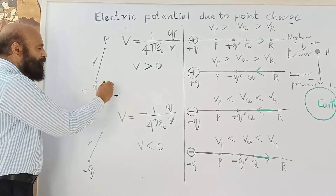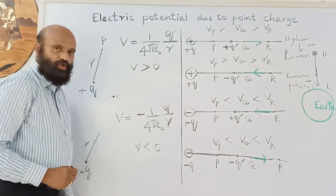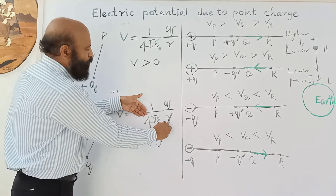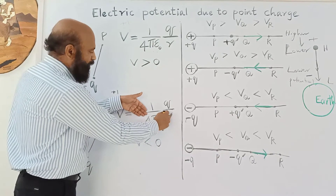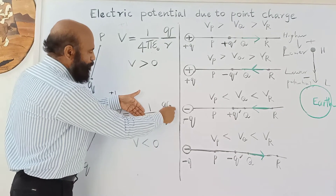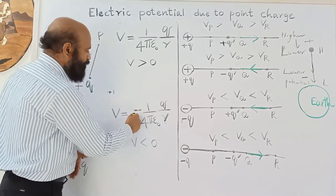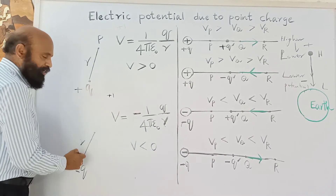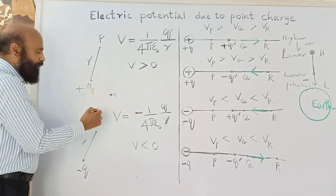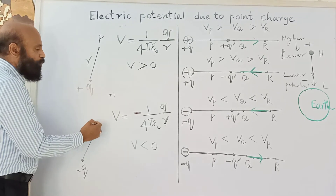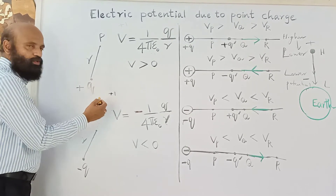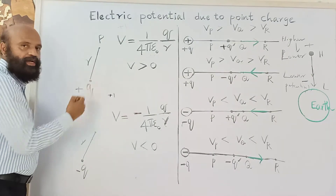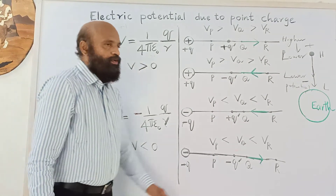As we move away from a negative charge, the potential increases. You can see this from the expression: as r increases, the magnitude (q/r) decreases, but because of the negative sign, the value increases. So for a negative charge, as we move away, potential goes on increasing from a negative value and finally becomes zero at infinity.